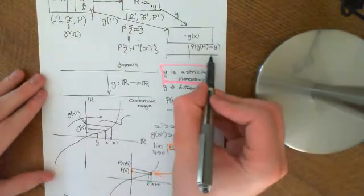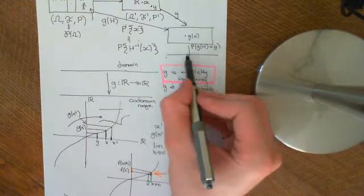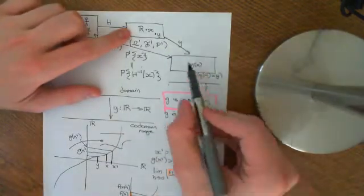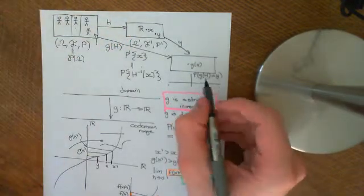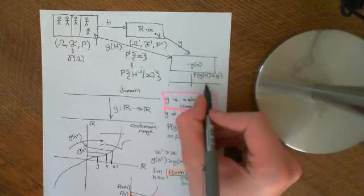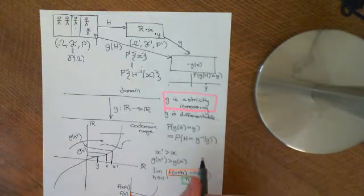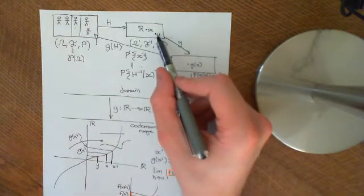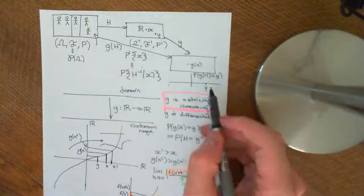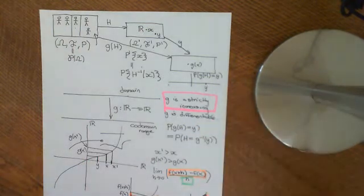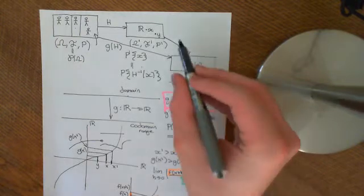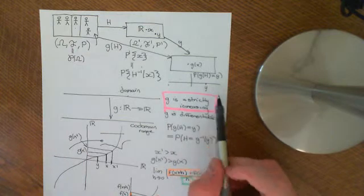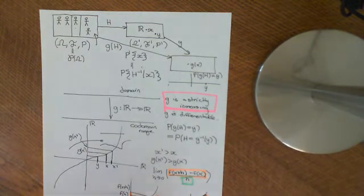If you want to know what the probability mass function for a value little y is, what you need to do is check whether there was a value in here that was mapped onto y by this transformation g. If so, ascribe the probability mass function to this point y, making it equal to the probability mass function for that point which was mapped onto little y — essentially taking y's inverse and using its probability mass function. And if little y has no such point which was mapped onto it, then just assign it the probability mass function zero.